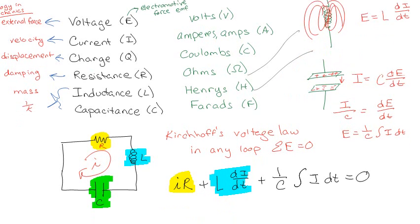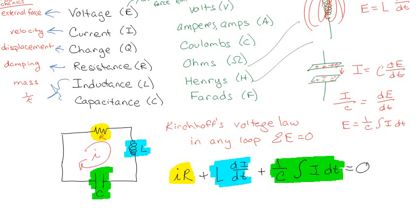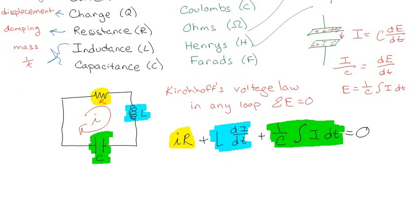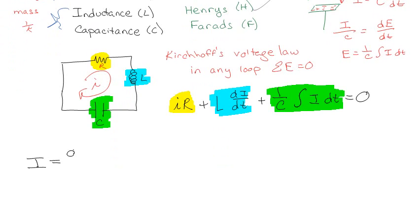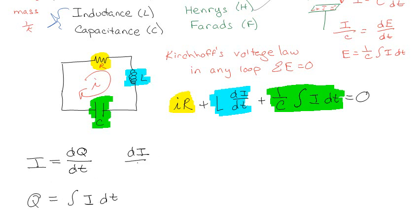Now I don't like having that integral in there, so I'll do a substitution. The current is defined as the rate of change of charge, so I = dQ/dt. That means Q equals the integral of I dt, and dI/dt equals d²Q/dt², or Q double prime.